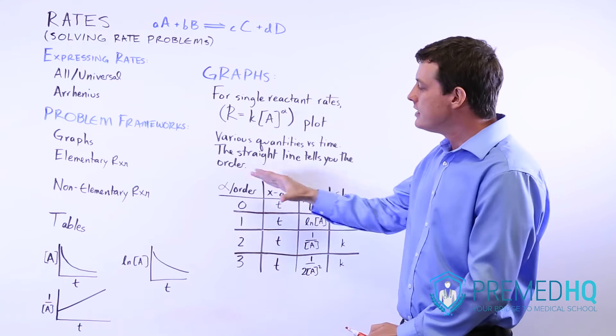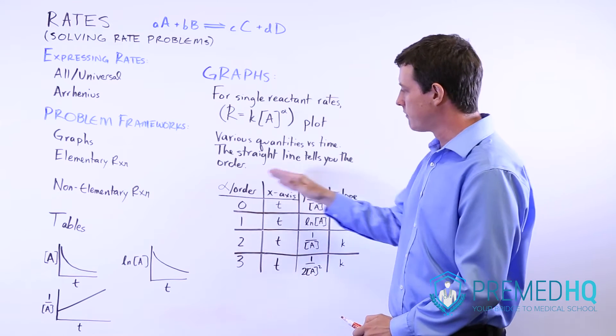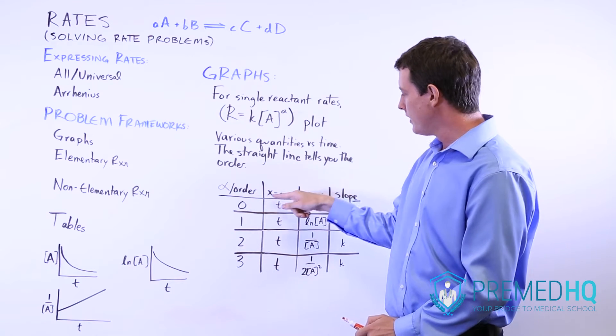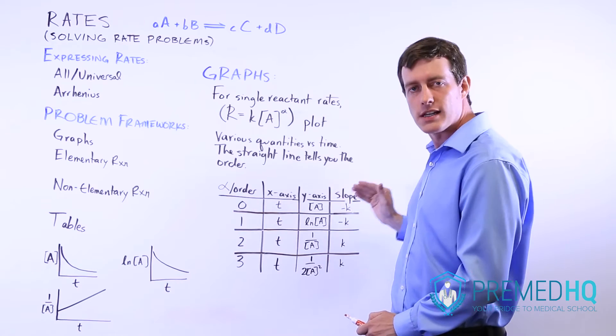And so these are the possibilities for the order, x-axis, y-axis, and slope.